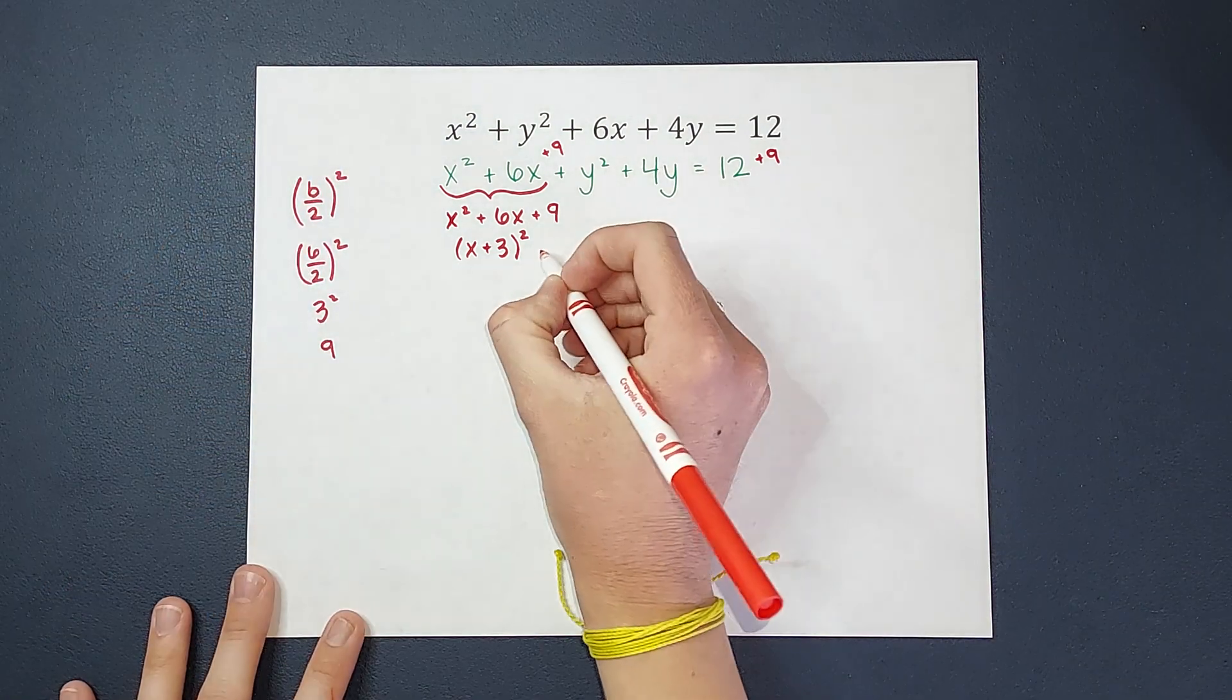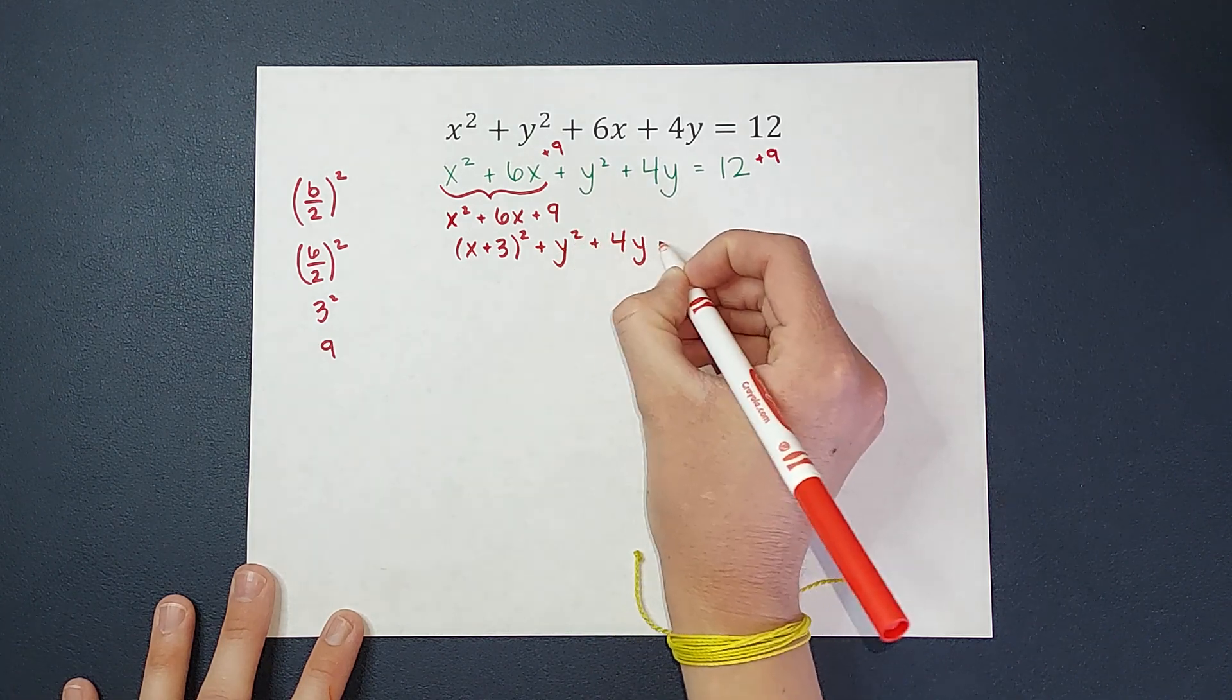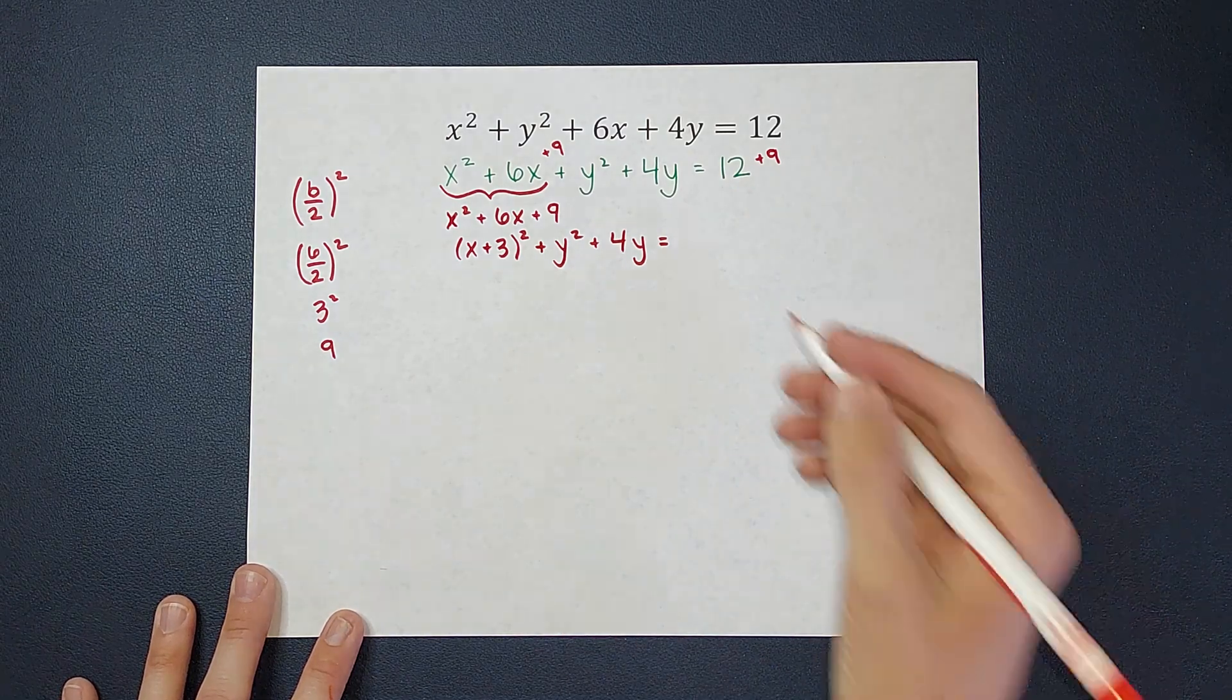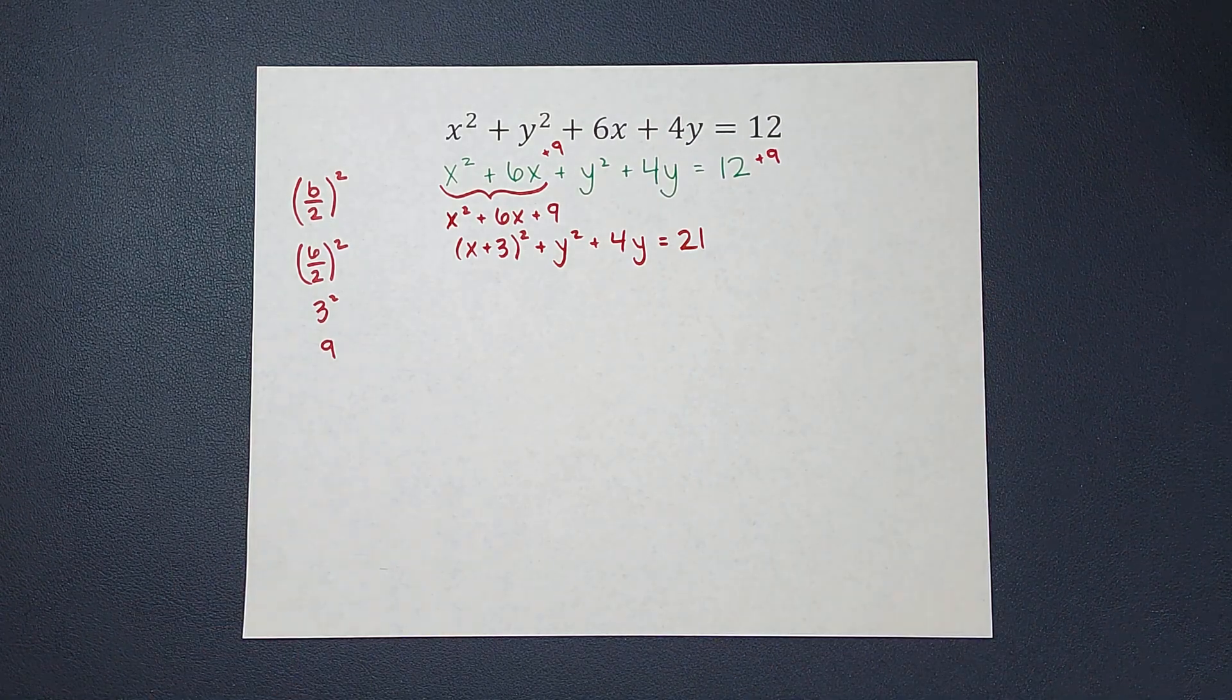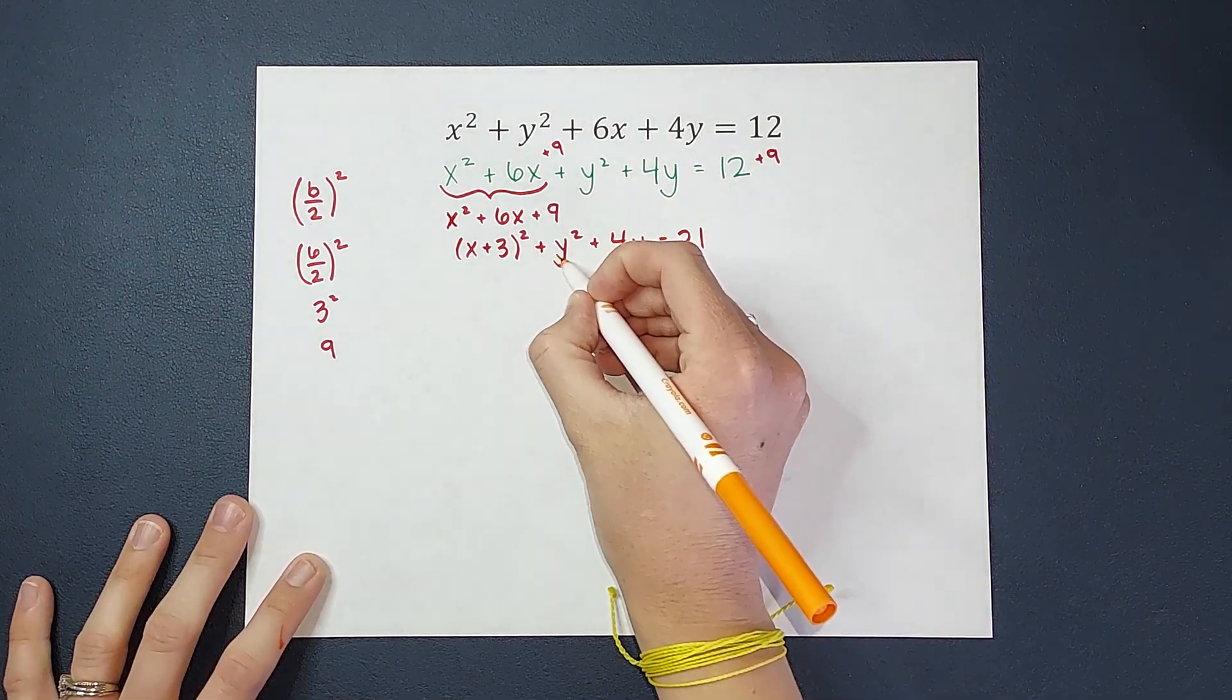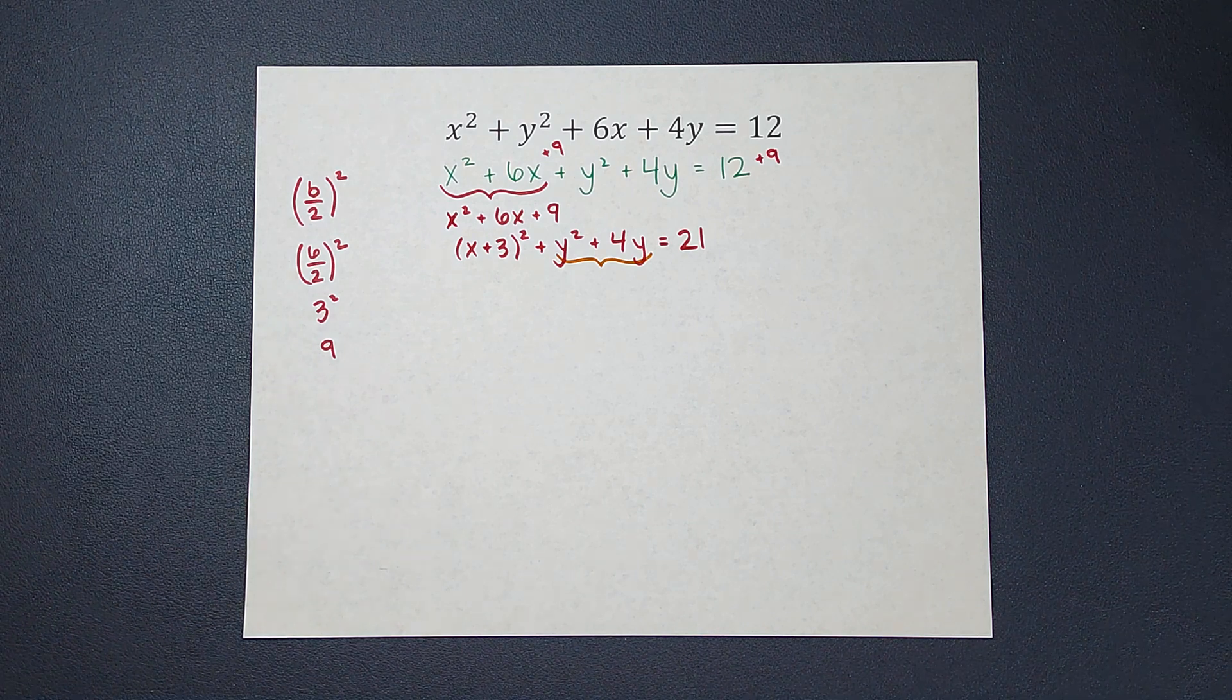But now I got to look at the y's. So I'm going to rewrite the y's now, and we are going to focus on those guys. Remember, I added that 9, so over there we are now 12 plus 9, which is 21. Next I am focusing on the y's. Now as you do this more and more, and you get more practice, you'll probably be able to just do them both at the same time, but for now, for the sake of this example, I wanted to split them up for you.